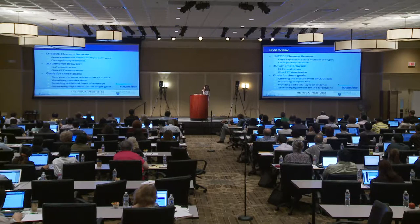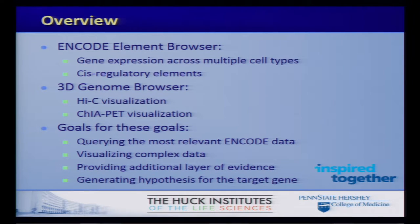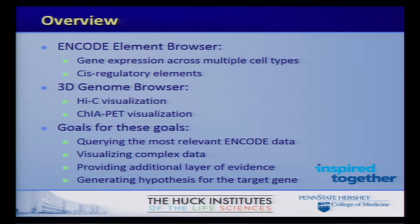The ENCODE element browser is the first thing we're going to cover. It broadly is a suite of four tools, and it covers two types of data: one is gene expression, and the other is regulatory elements. This part ties back into the dataset that Michael talked about. The next browser is a 3D genome browser, which visualizes Hi-C and ChiaPet data.